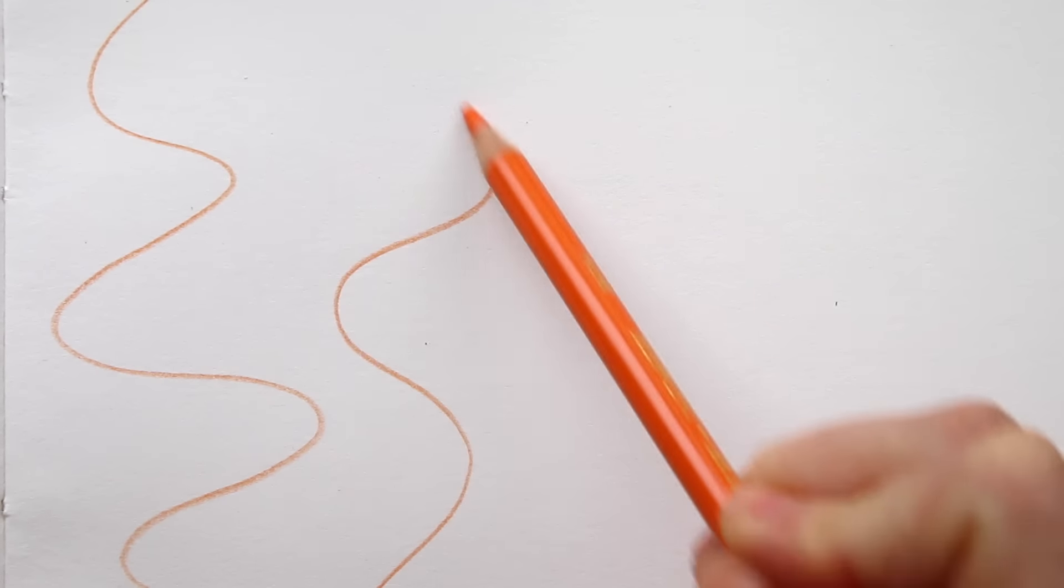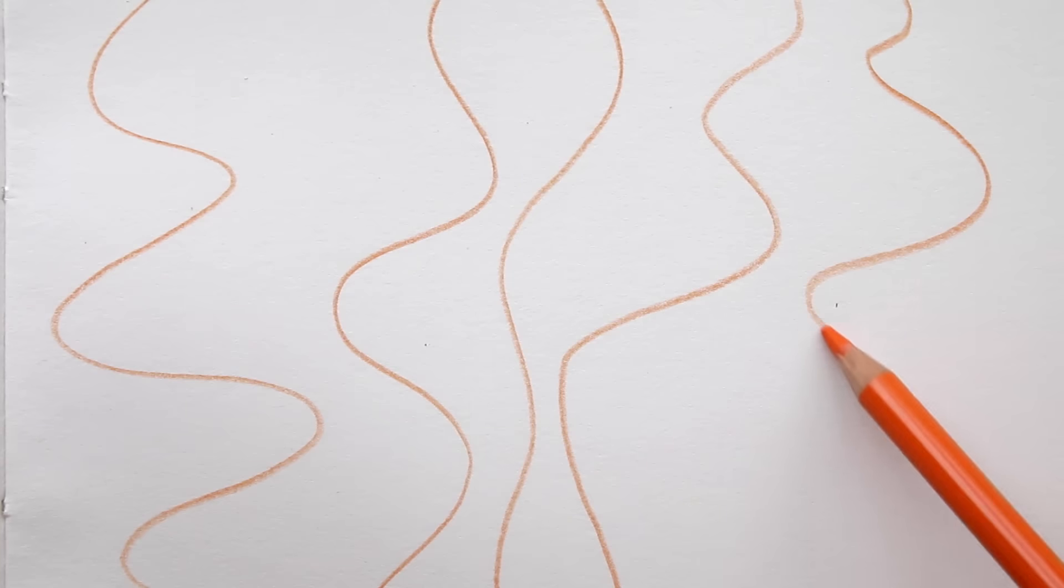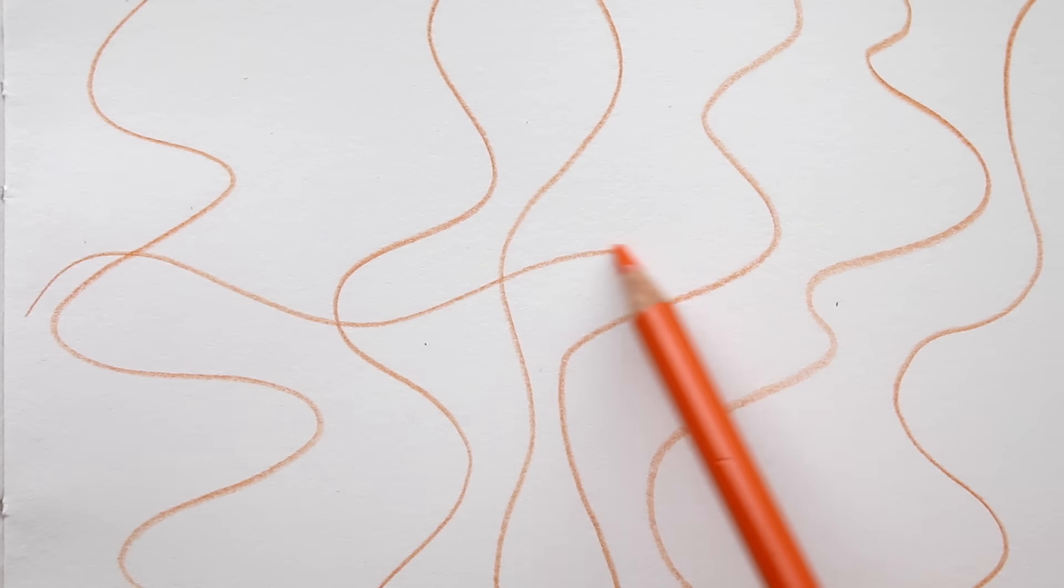So start doodling! Draw curvy lines vertically on your paper, then add one curvy horizontal line through the middle.